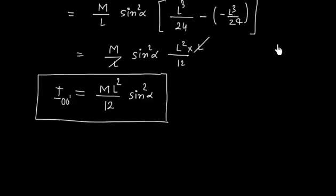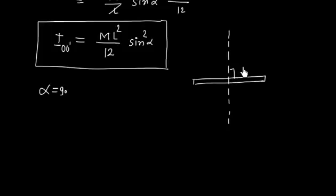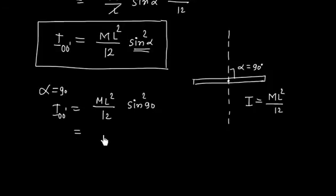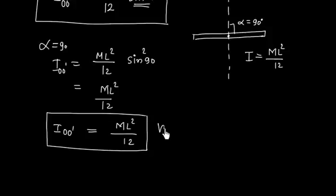Now we can discuss different cases. When alpha is 90 degrees, the rod is perpendicular to the axis. In this case, the moment of inertia of a rod about its center of mass perpendicular to the rod is ML squared by 12. Putting sin 90 degrees equal to 1, we get I about OO dash equals ML squared by 12 times 1, which is simply ML squared by 12. This verifies our result using the standard result.